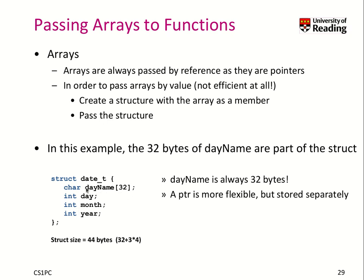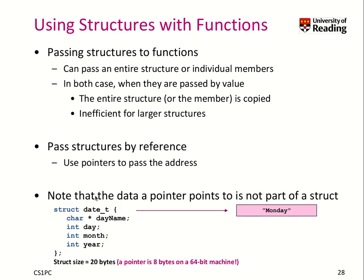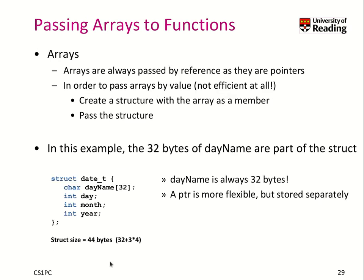If we take our previous example and replace day_name — which was a pointer somewhere in memory — with an array of 32 characters, then inside the memory location of the structure we now have 32 bytes for the day name. This of course has an impact on the structure size, which is now 4, 8, 12, plus 32 bytes — so 44 bytes total. If we put things on the stack, the size is predefined and bigger. We went from 20 bytes to 44 bytes. But if you know that the day name is always small in size, you could use an array.